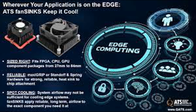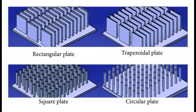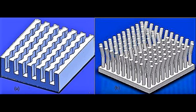Heat distribution is the process by which thermal energy absorbed by a material or object is evenly spread or dispersed throughout its structure. In the context of a heat sink, heat distribution refers to the spreading of the absorbed heat across the heat sink's surface area. After a heat sink absorbs heat from the electronic component through conduction, the thermal energy begins to distribute throughout the material of the heat sink, ensuring that the heat is not concentrated in one area but rather spread out evenly over the entire surface.